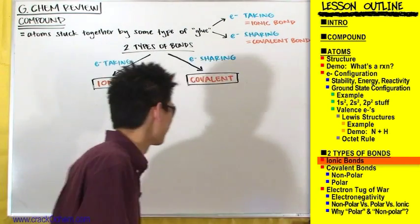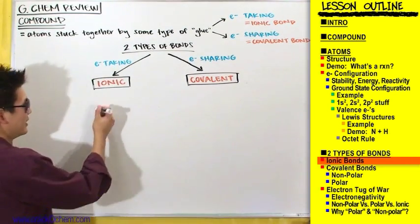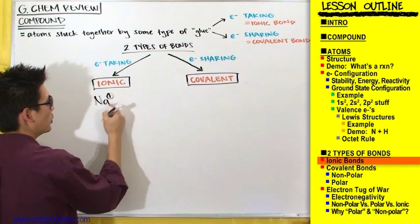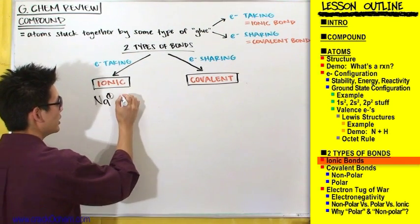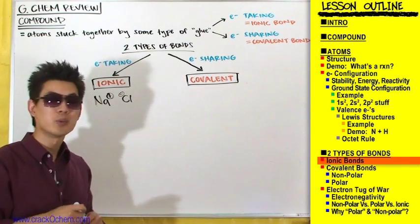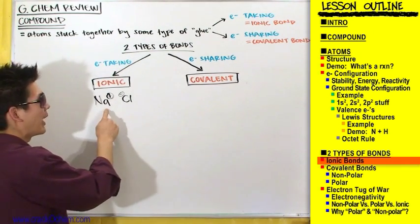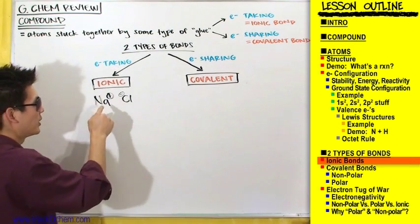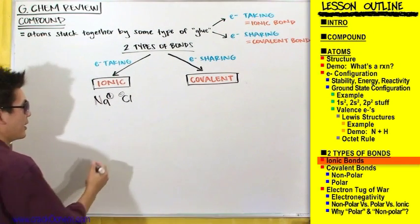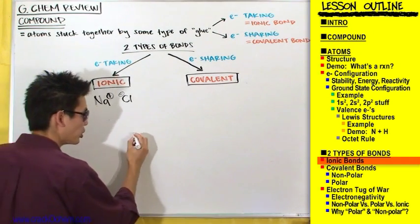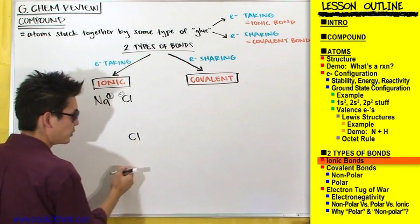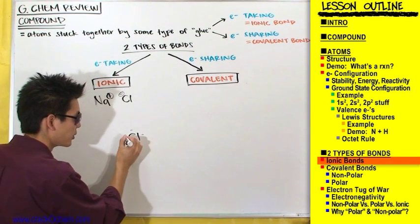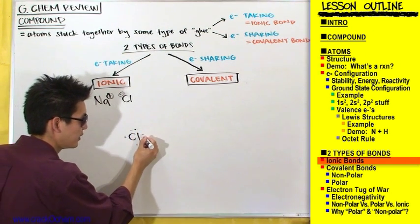So salt, NaCl — draw it like this: sodium with a positive charge and chlorine with a negative charge. The reason I want you to draw it this way is because these two atoms are not sharing electrons. Instead, chlorine is taking an electron from sodium. If you draw out the Lewis structures for sodium and chlorine, you'll find that chlorine has seven valence electrons, so his Lewis structure has one, two, three, four, five, six, seven electrons.